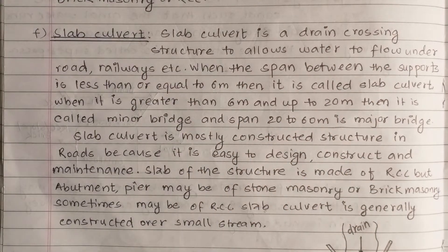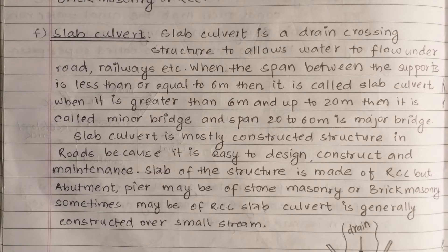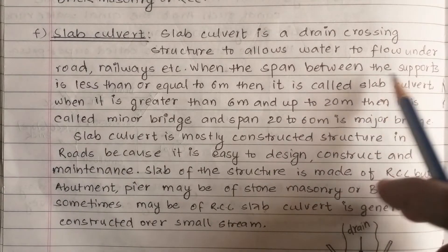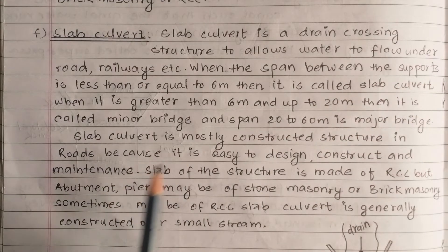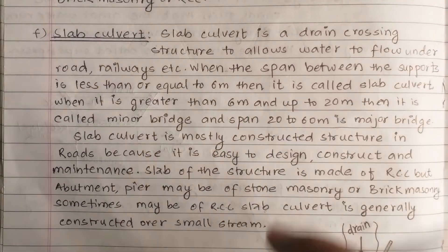This is a cross drainage structure. A slab culvert is defined by its span: if the span between the supports is less than or equal to 6 meters, then it is called a slab culvert.